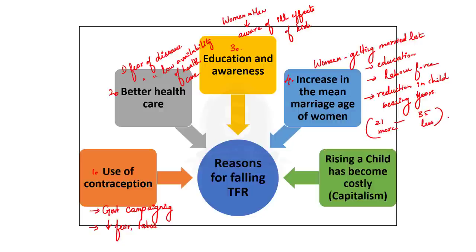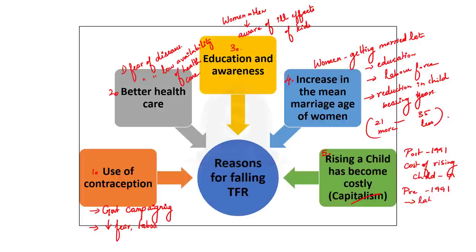The fifth reason for falling TFR is capitalism. Post-1991 LPG reforms, the cost of raising a child has increased. Previously, people had more children because they saw children as labor force — pre-1991, the dominant sector was agriculture, so more children meant more hands to work in the fields. After 1991, agriculture lost relative significance, so having fewer children is now actually an economic decision made by parents.